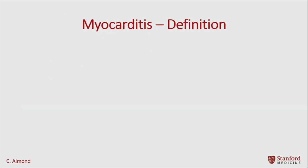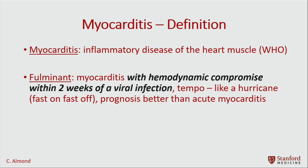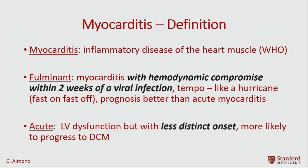Let's talk about myocarditis and its definition. By the World Health Organization, it is an inflammatory disease of the heart muscle — one of the shortest definitions in cardiology. Fulminant myocarditis is myocarditis with hemodynamic compromise within two weeks of a viral infection. The tempo is like a hurricane: fast on, fast off, and generally has a pretty good prognosis. By contrast, acute myocarditis has a less distinct onset and is actually more likely to progress to DCM. Those are the three major definitions you might encounter.